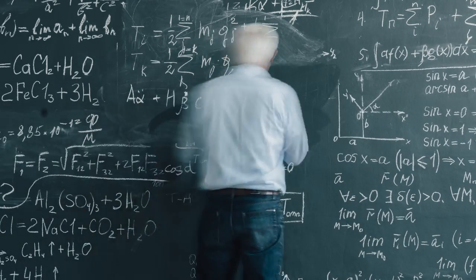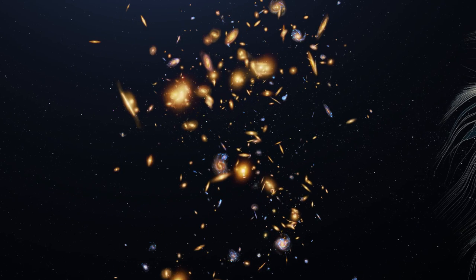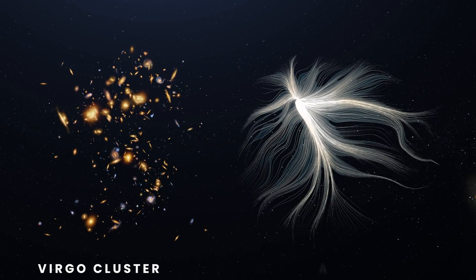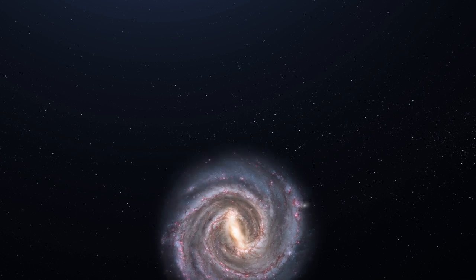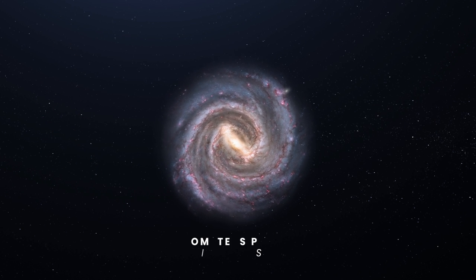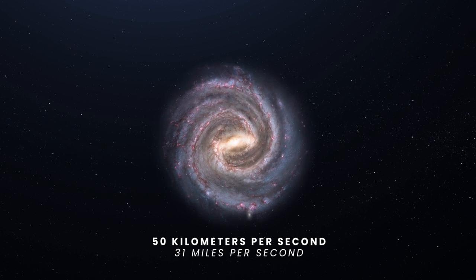The researcher came to this conclusion by calculating the gravitational force of the Virgo cluster, the Great Attractor, and the Shapley supercluster, and it doesn't add up. It turned out that our galaxy should move slower, by about 50 kilometers per second.